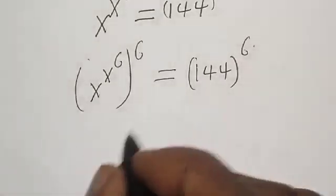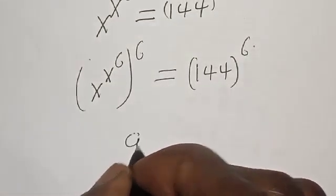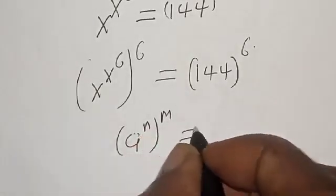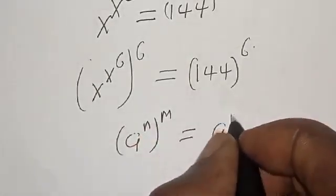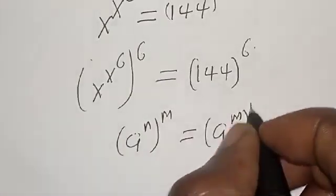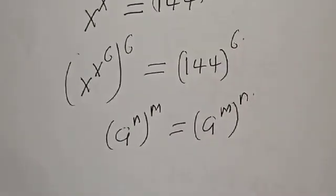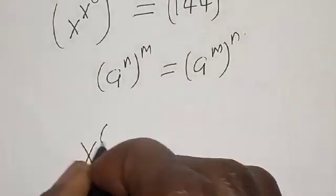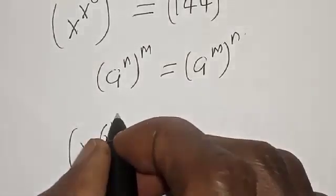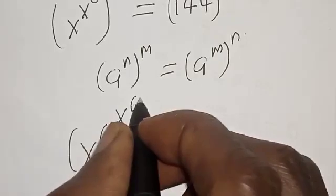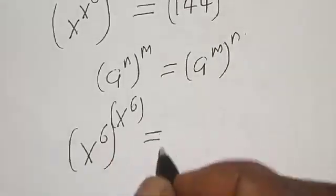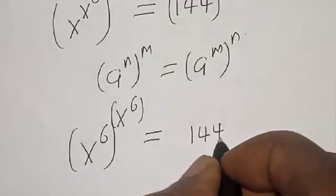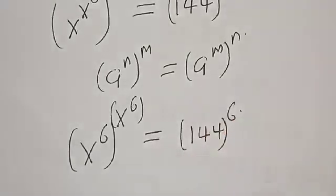On the left-hand side, remember that if you have a raised to the power n raised to the power m, it is the same thing as a raised to the power of m raised to the power of n. So we have s raised to the power of s raised to the power of 6, is equal to 144 raised to the power of 6.